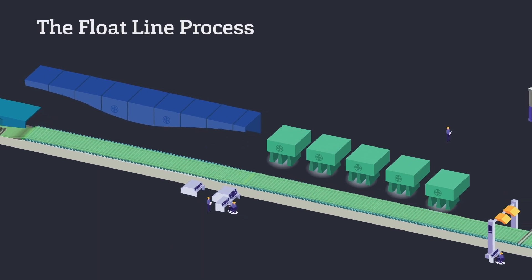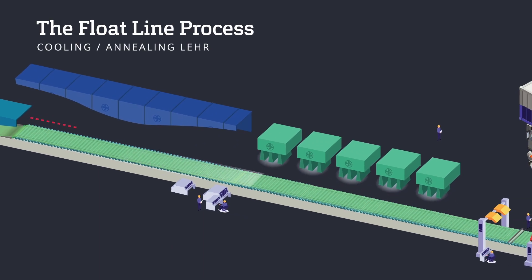Upon exiting the tin bath, the glass is progressively cooled in the annealing LEA. It consists of a closed channel, followed by an open stretch exposed to forced air.